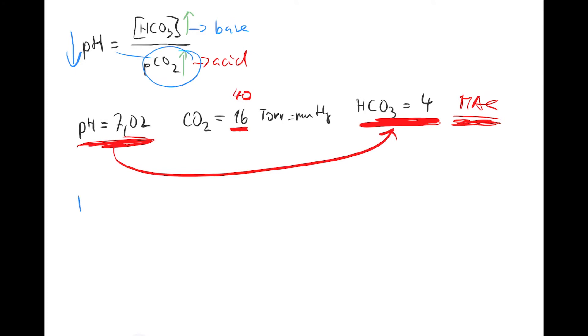Let's get another example. pH is going to be 7.48, CO2 is going to be 47 millimeters of mercury, and bicarb is going to be 34. So all of you think about it. What do you think is that?